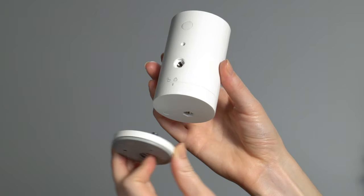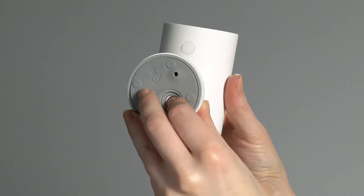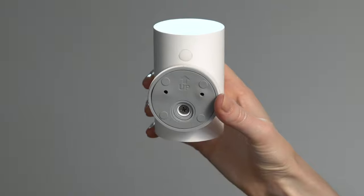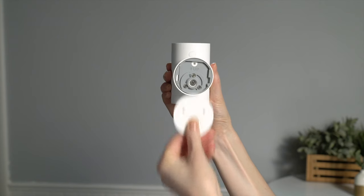Reattach the base to the back of your Stick Up Cam. Make sure the up arrow on the bracket is pointing upwards. Once it's on, remove the mounting bracket from the base. It'll slide right off.